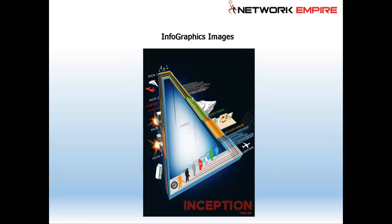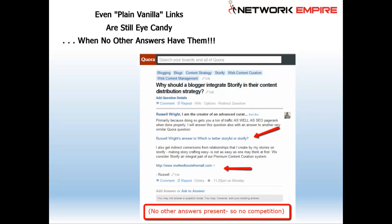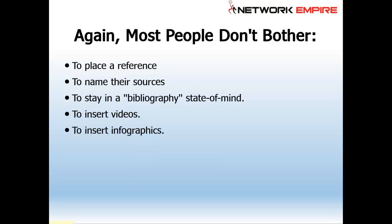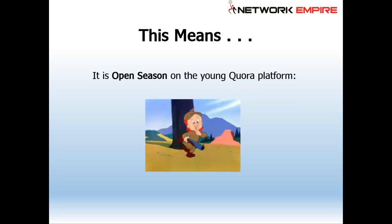Even plain vanilla links are still eye candy when no other answers have links. Sometimes I'll see a conversation on Quora where nobody's inserting a link to complete information and nobody's in a bibliography state of mind — meaning nobody's quoting sources, citing references, or pointing to a professional expert answer. If no other answers are present, there's no competition. Even without video or infographics, you might be the only one with links, or the only answer at all. This means it is open season on the young Quora platform.